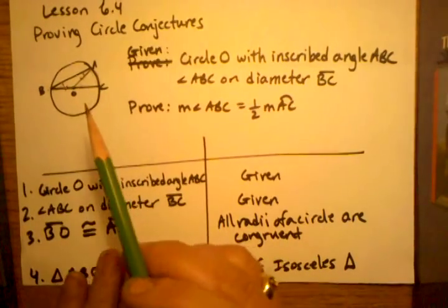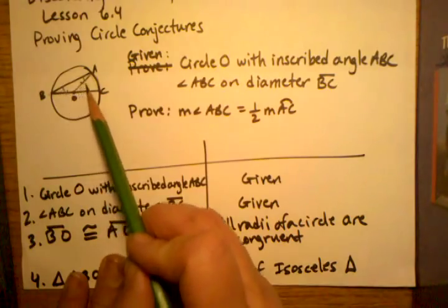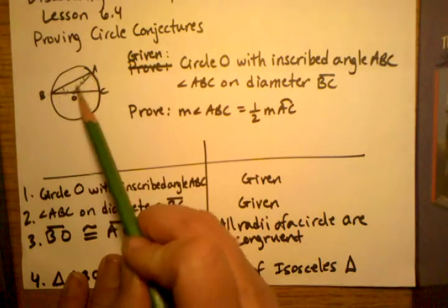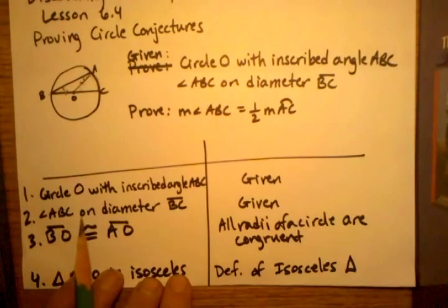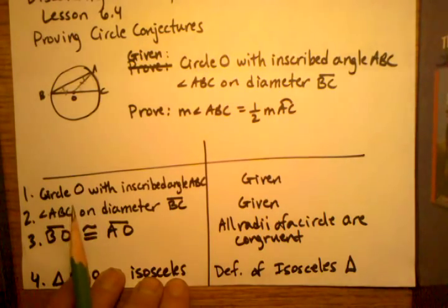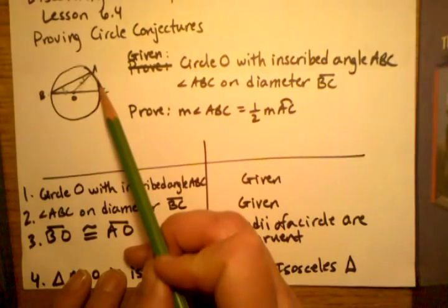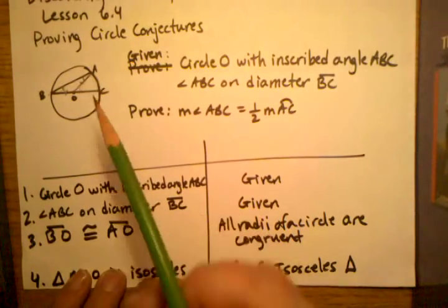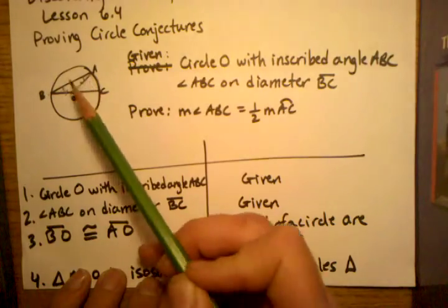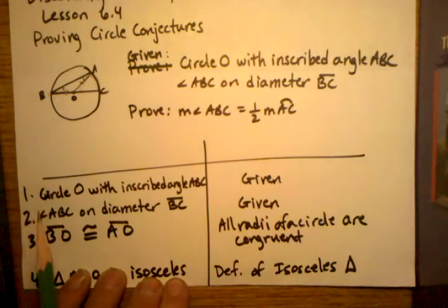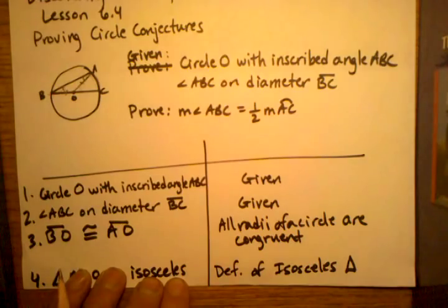I could jump right into saying that because this is an isosceles triangle, these two angles must be equivalent, but that doesn't get me anywhere. It doesn't help me determine the measurement of this arc, and just knowing that this angle is equivalent to this angle, I wouldn't even know where to go next. So what else do I know about the angles of a triangle?